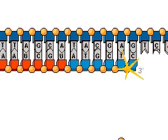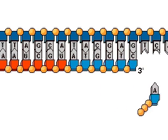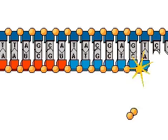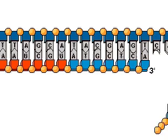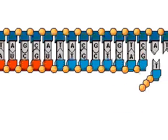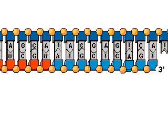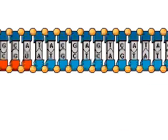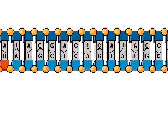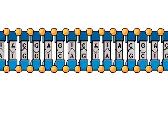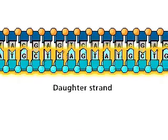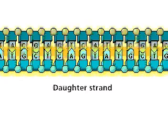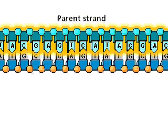C pairs with G. A pairs with T. Since deoxyribonucleotides are added, T pairs with A. The newly synthesized DNA strand is called the daughter strand. The sequence of bases in the daughter strand is complementary to the sequence of bases in the parent strand.